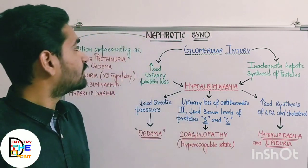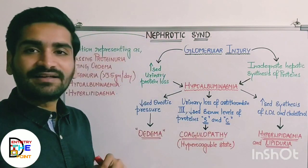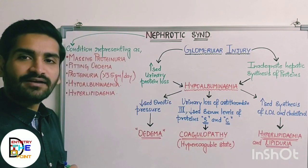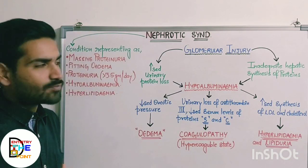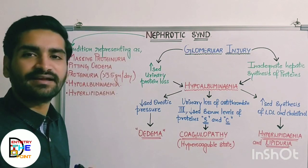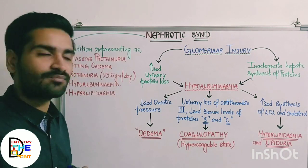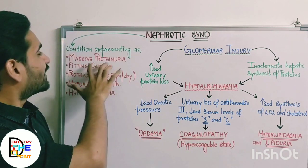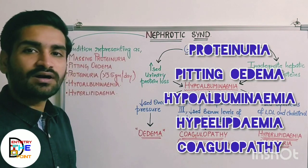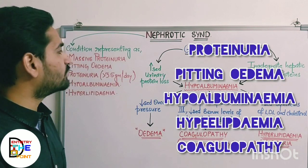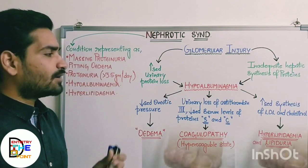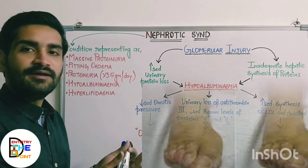Now let's move on to nephrotic syndrome. Nephrotic syndrome consists of five things in total. First is massive proteinuria — that is, a very large amount of protein loss in the urine. Second is pitting edema.